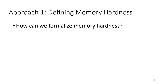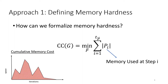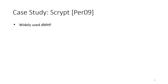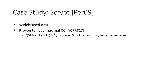A natural question is how can we formalize our intuitive notions of memory hardness? One way is through cumulative complexity, which is the sum of the memory used at each time step. As an example, S-crypt is a widely used memory hard function. It has been proven to have maximal cumulative complexity of n squared, where n is the running time parameter.